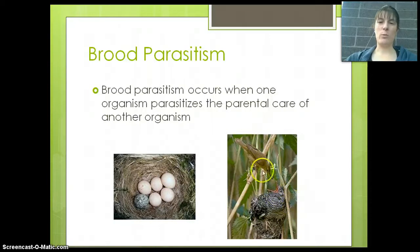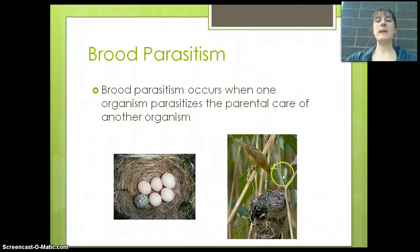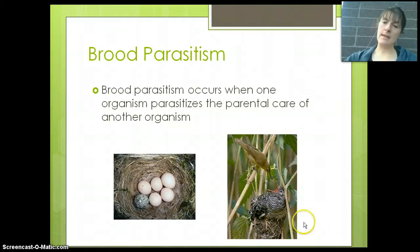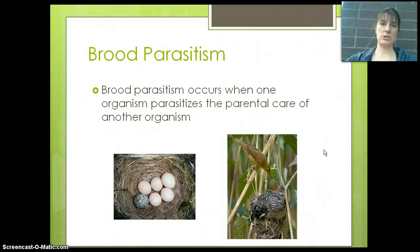The cowbird baby pushes the rest of the eggs out of the nest. In addition, the warbler mom is able to feed the baby that killed the rest of her babies. She doesn't notice that it's not hers, even though it obviously looks very different — it just has all the cues to cause her to feed it. So the cowbird benefits from this relationship where the warbler is obviously hurt.